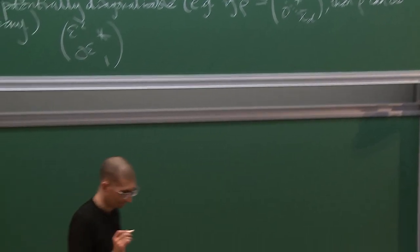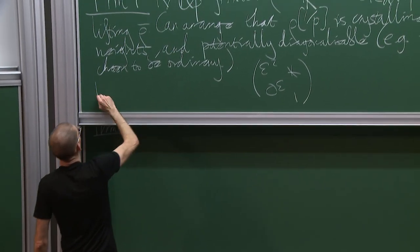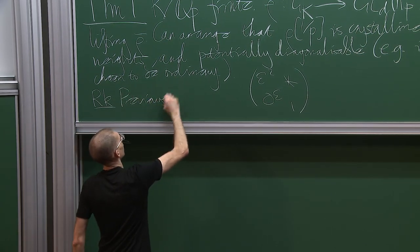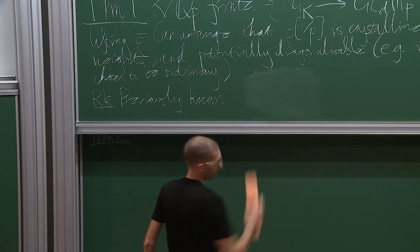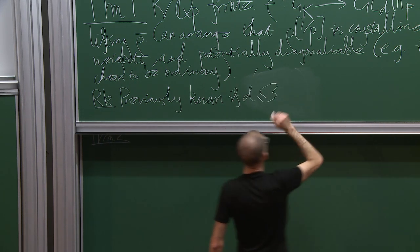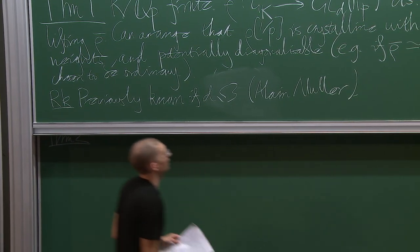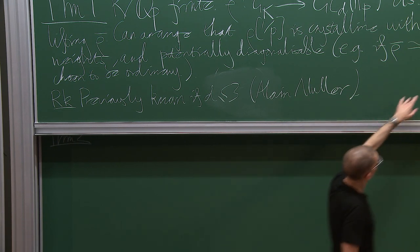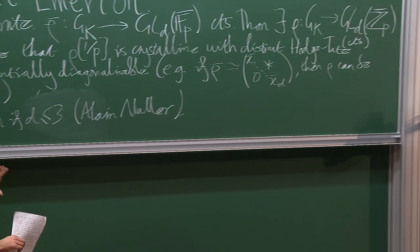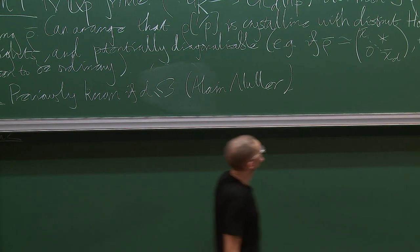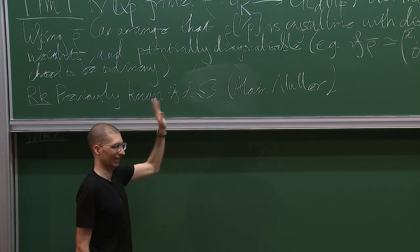Theorem two is a related global result. I should also remark: this theorem was previously known in the case that d is at most 3 — this is a theorem of Alan Muller in his PhD thesis, supervised by Vantenberghe. Already for an extension of three characters it's not so easy to prove by a bare-hands approach. Various people thought about this problem; I think there are unpublished works where people perhaps did d equals 4, but even d equals 5 there starts to be a real problem.